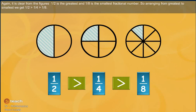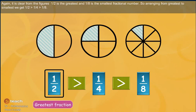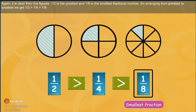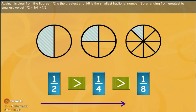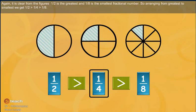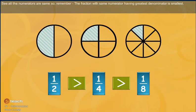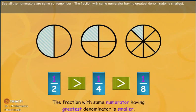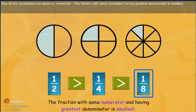Again, it is clear from the figures that one by two is the greatest and one by eight is the smallest fractional number. Arranging from greatest to smallest, we get: one by two is greater than one by four, and one by four is greater than one by eight. See the numerators — all are the same. So remember, the fraction with the same numerator having the greatest denominator is smaller.